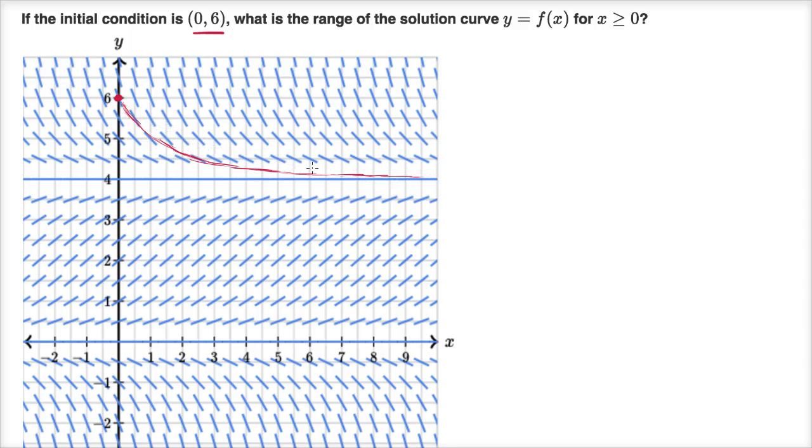So the range, the y values that this is going to take on, y is going to be greater than four. It's never gonna be equal to four, so it's going to be greater than four, that's gonna be the bottom end of my range, and at the top end of my range, I will be equal to six. Six is the largest value that I am going to take on. Another way I could have written this is four is less than y is less than or equal to six.